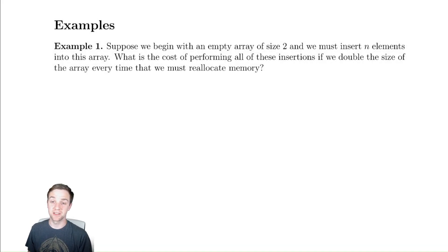In this video we're going to begin our discussion of hash table doubling and how we can do this in an effective way. So here's our example. We suppose we begin with an empty array of size 2 and we must insert n elements into this array. We ask what is the cost of performing all of these insertions if we double the size of the array every time we must reallocate memory.